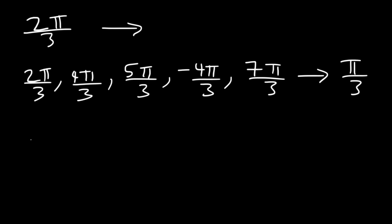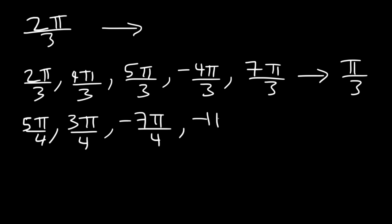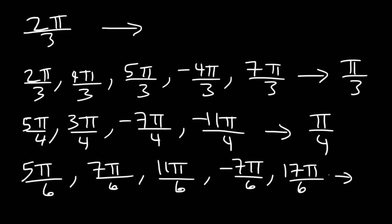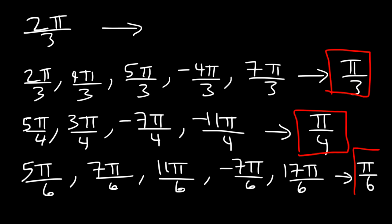Similarly, angles like 5π/4, 3π/4, negative 7π/4, or negative 11π/4 all share the same reference angle of π/4. So if you see a common angle, you can literally see what the reference angle is. This technique only works for common angles on the unit circle — if you get something like 2π/5, this approach doesn't work.